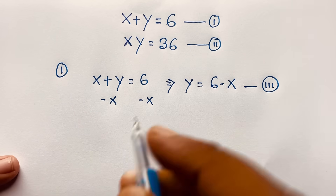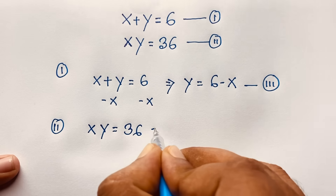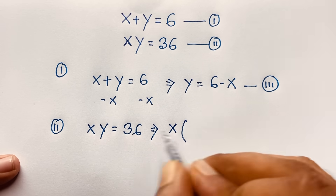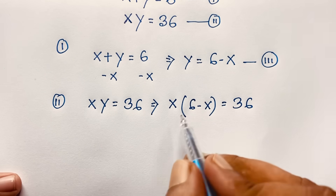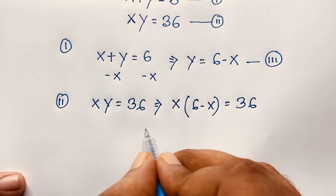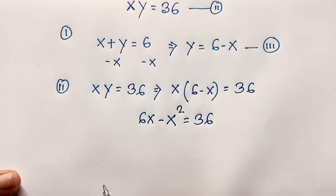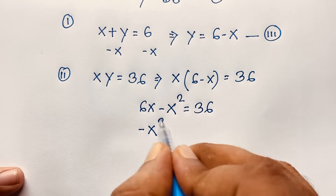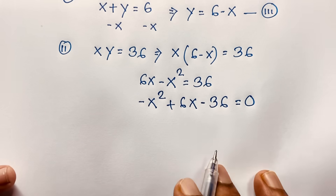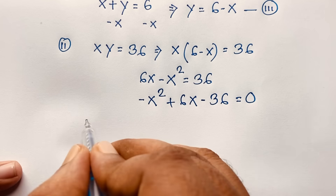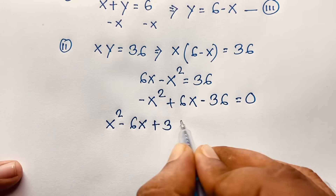Now if I take our second equation, x y is equal to 36. Then x times y — y it will be 6 minus x — is equal to 36. Then here 6 times x minus x squared is equal to 36. So: negative x squared plus 6x minus 36 is equal to 0.